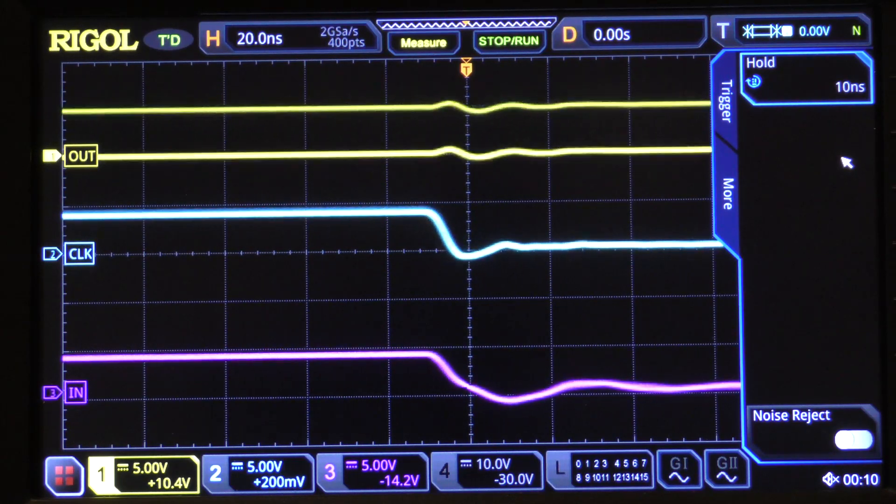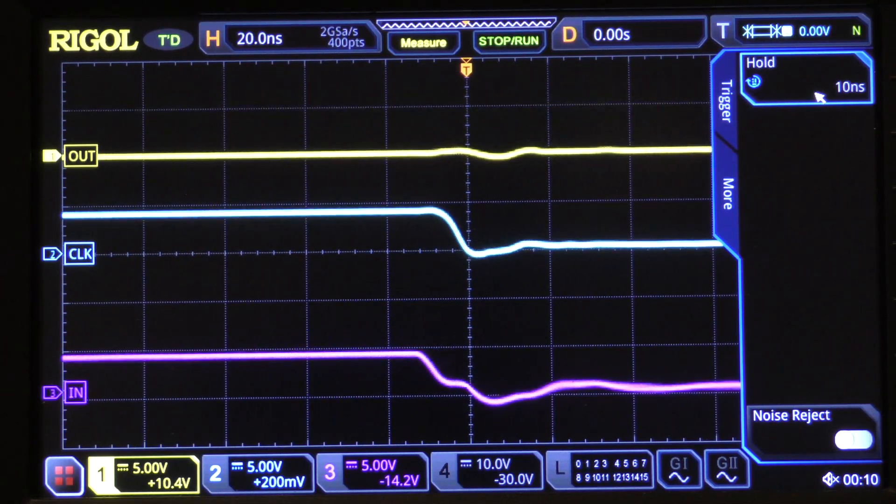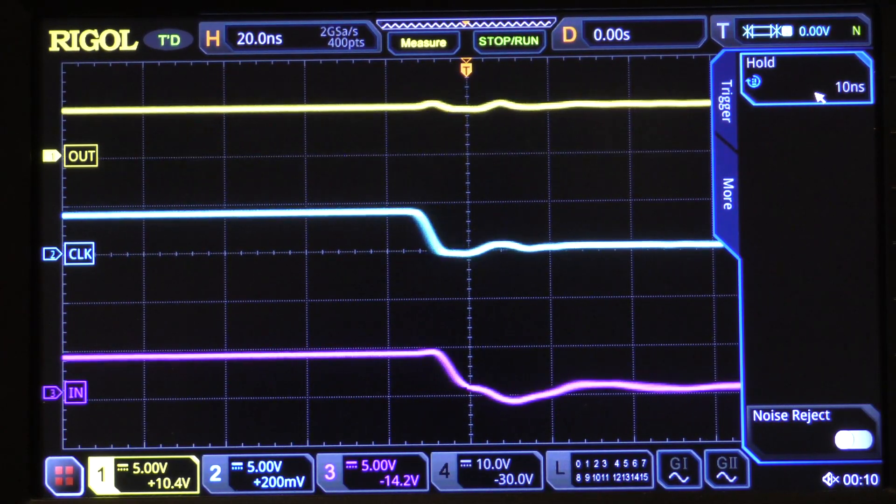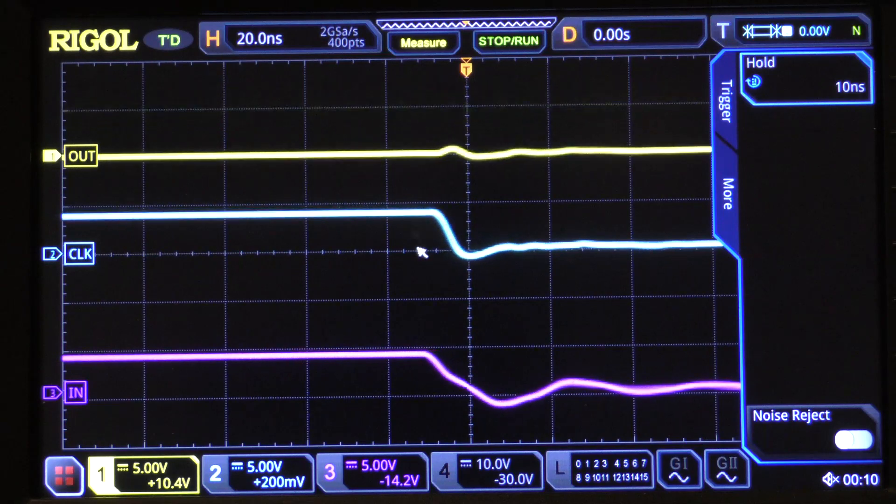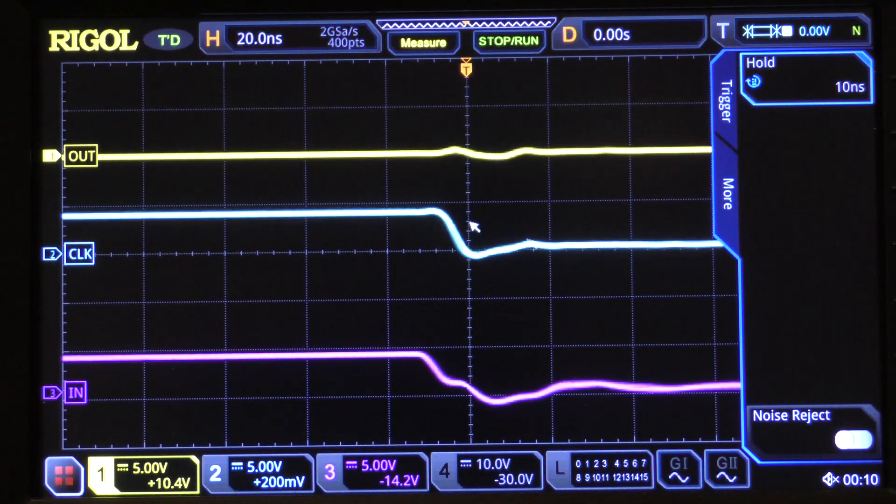Now if we set this to zero, which this scope is incapable of doing, but if we set it to zero, then this would never trigger. Because there's never a time when the clock occurs significantly before the data transition. It always occurs at or after.